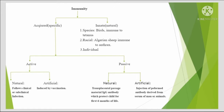Acquired immunity is divided into two types: active and passive. Active immunity is again divided into two: natural and artificial. Natural active acquired immunity follows clinical or subclinical infection, while artificial active acquired immunity is induced by vaccination.